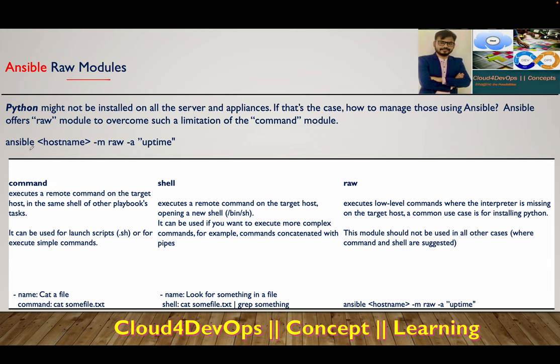The syntax is: ansible, then the hostname, hyphen M for the module which is raw, hyphen A for the argument, and then whatever operation you want to perform.